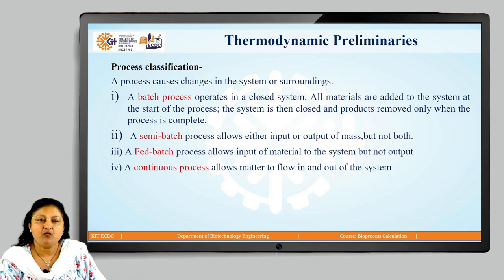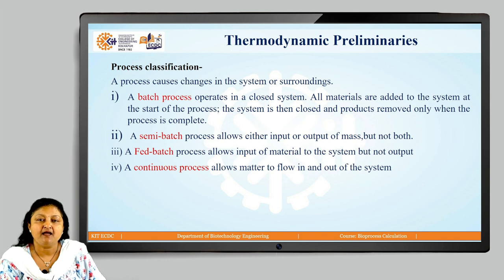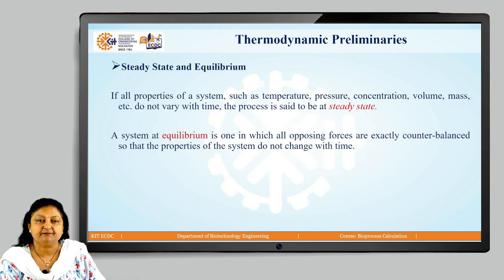A semi-batch process allows either input or output of mass, but not both. A fed-batch process allows input of material to the system but not output. A continuous process allows matter to flow in and out of the system.